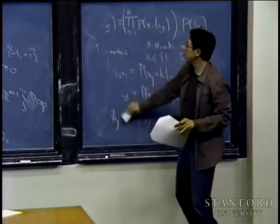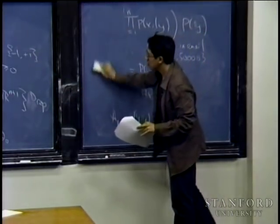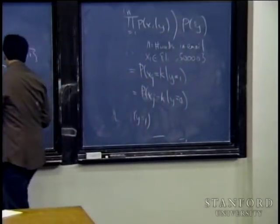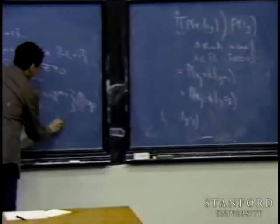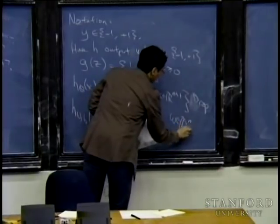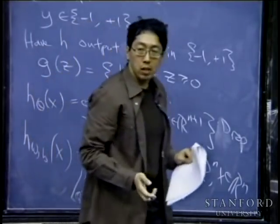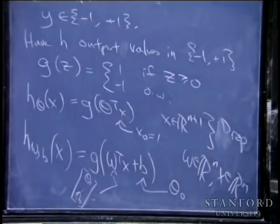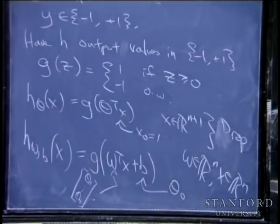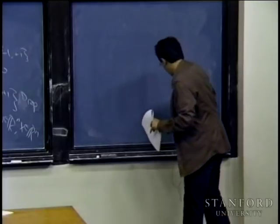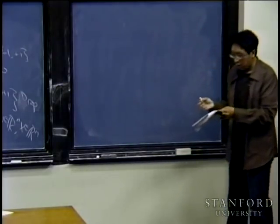A student asks: is w in R^n? Yes, w is a vector in R^n, x is now a vector in R^n (not n+1), and b is a real number.